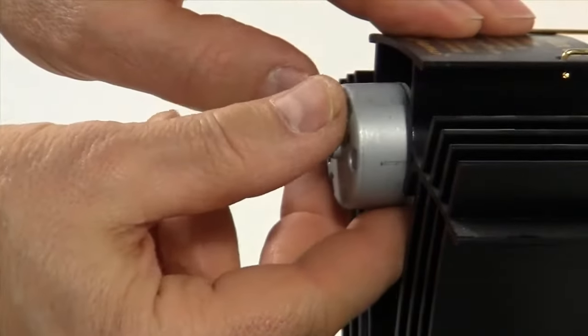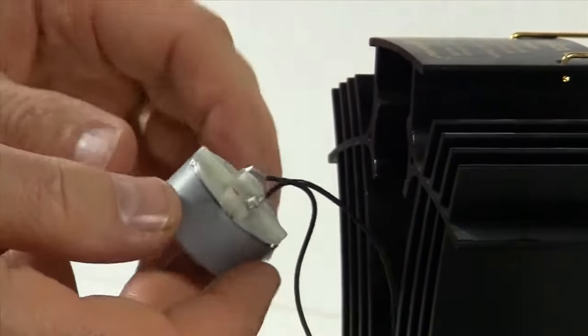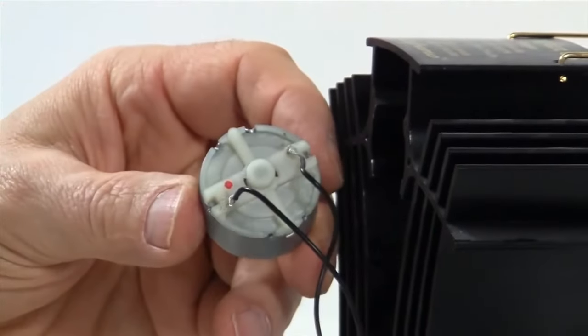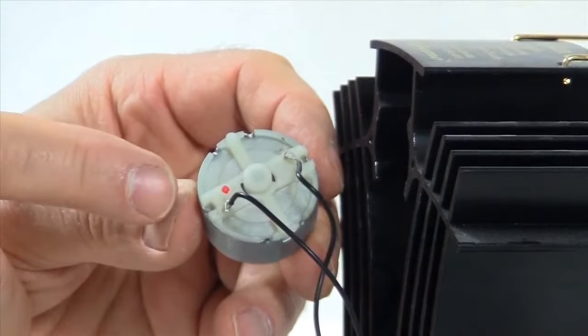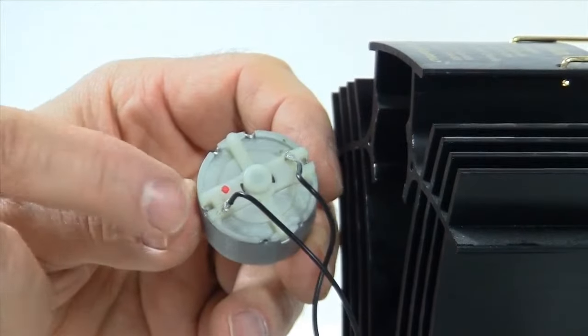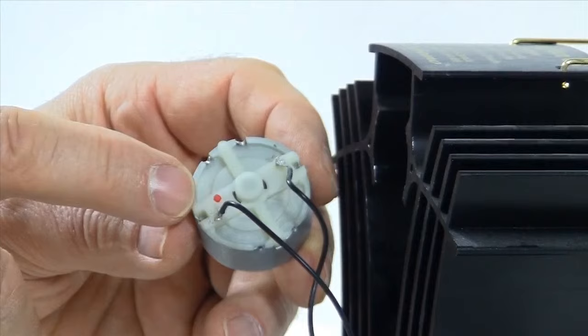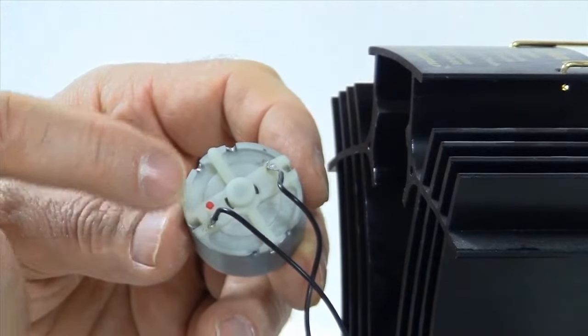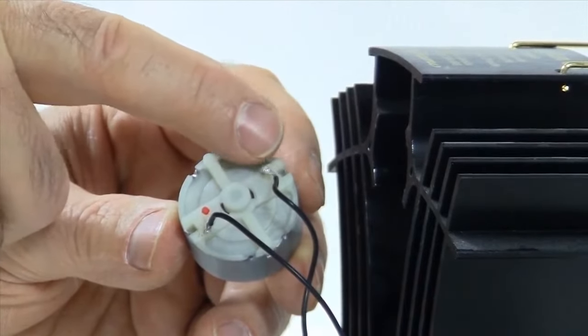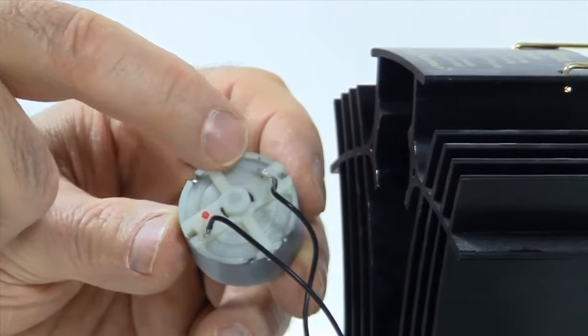Now we simply pull the motor out from its housing and we can see that the motor has the wires soldered directly to the back of the motor on some terminals. One of the wires is connected to a terminal marked with a red dot and the other black wire is connected to a terminal which has no markings on it.